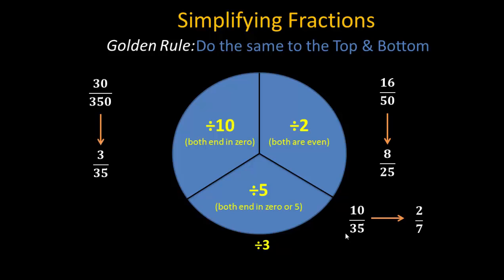The divide by 3 rule is where you look at the numbers top and bottom and add the digits together. If those digits come to a multiple of 3, then 3 itself will go into that value.